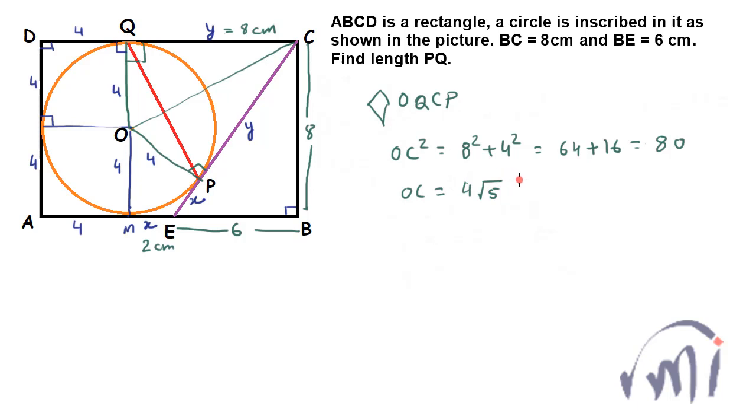So this is the length of OC, and the area of the kite is given as 1 by 2 multiplied by the product of both the diagonals, that is multiplied by OC multiplied by PQ. And this will also be equal to the sum of the areas of both these right angle triangles, triangle OCP and triangle OQC, and both of them are congruent triangles.